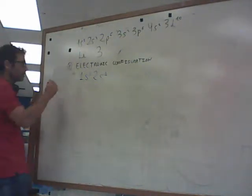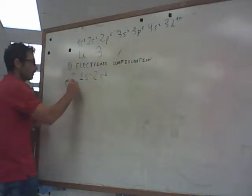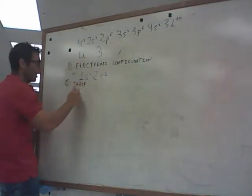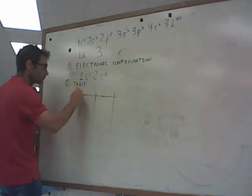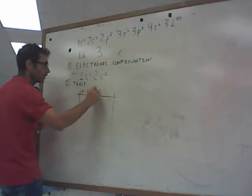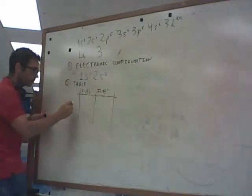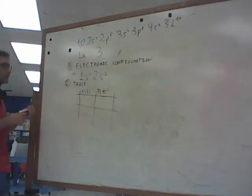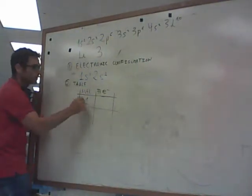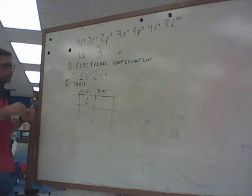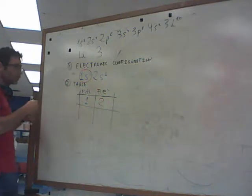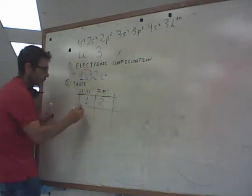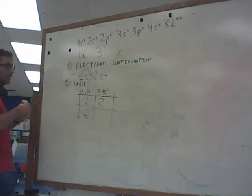I made a table with the level and the number of electrons, okay? So for level 1, I've got two electrons here, and for level 2, got only one, okay?